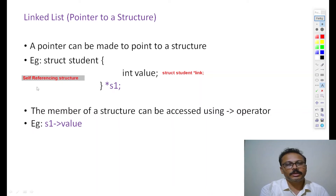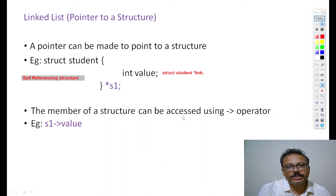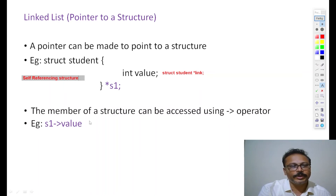This is called a self-referencing structure, because the link field is referring back to 'student' itself. If the member of a structure is accessed using a pointer variable, you use the arrow operator — for example, s1->value. If it is an ordinary variable, you use the dot operator.